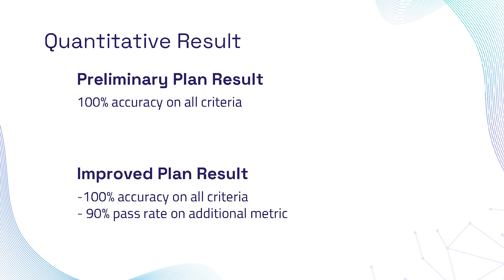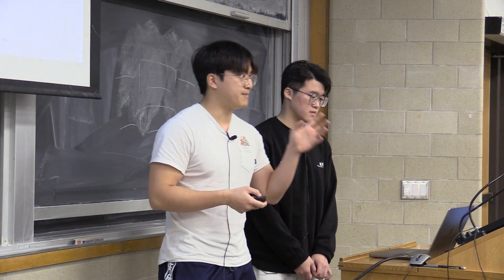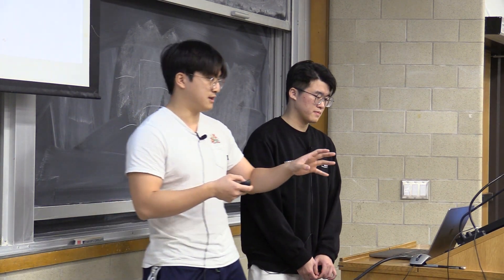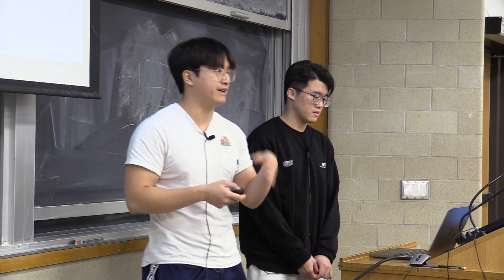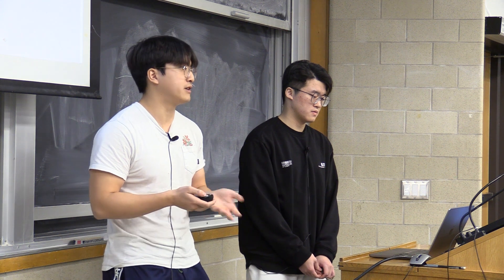Our results are quite surprisingly good. For both the preliminary and improved plan, we achieved 100% accuracy on all accuracy criteria. However, on the improved plan, we were only able to get a 90% pass rate on the additional metrics. As you can see, the activities of this plan are drastically different than the previous one, even though we only wanted to change the hotel information.